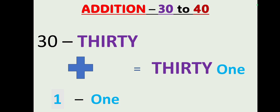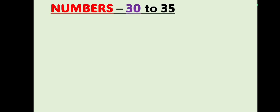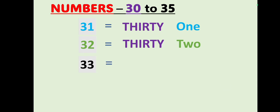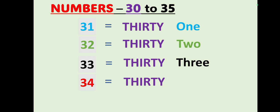Let's move on to the class. Numbers 30 to 35: Number 31 — T H I R T Y, 30, O N E, 1 — 31. Number 32 — T H I R T Y, 30, T W O, 2 — 32. Number 33 — T H I R T Y, 30, T H R E E, 3 — 33.